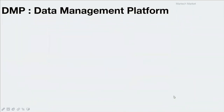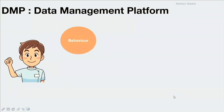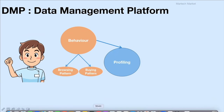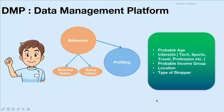Moving on to DMP or Data Management Platform — it is also an intelligent software that tracks a user's behavior across various websites on the internet and tries to create a customer profile. When we talk about behavior, it's basically the browsing pattern, the different kinds of websites a user browses, different content a user consumes, or different products a user buys across various websites on the internet.